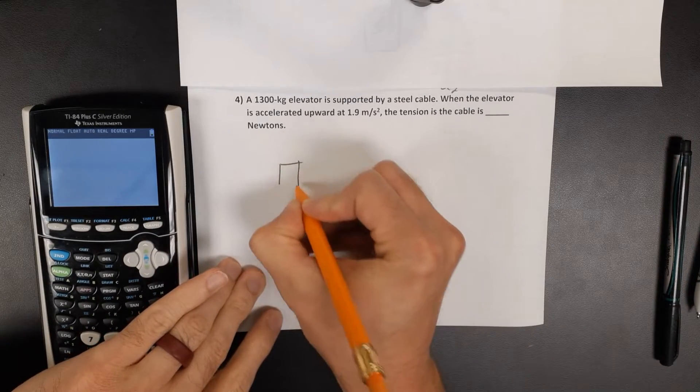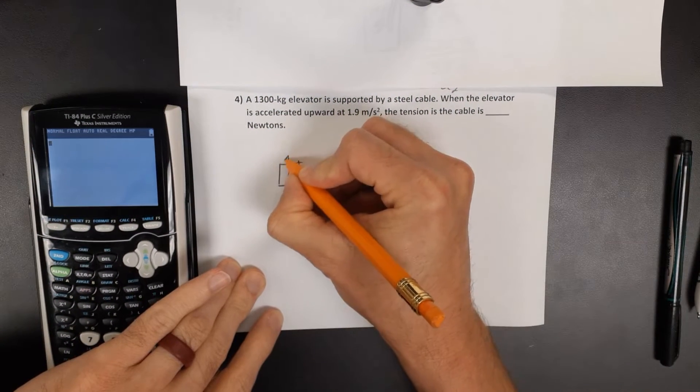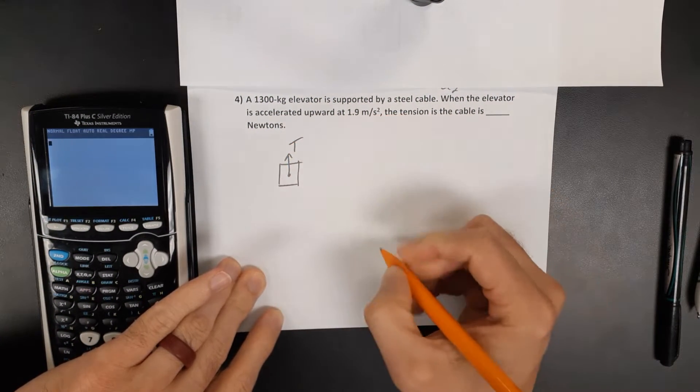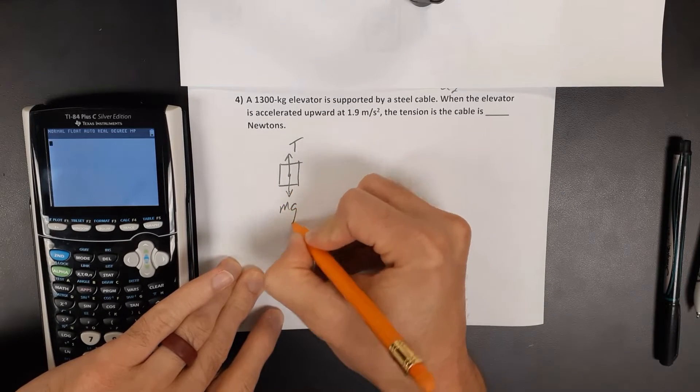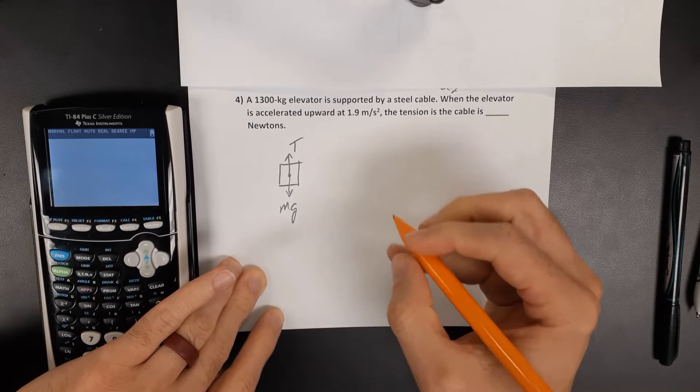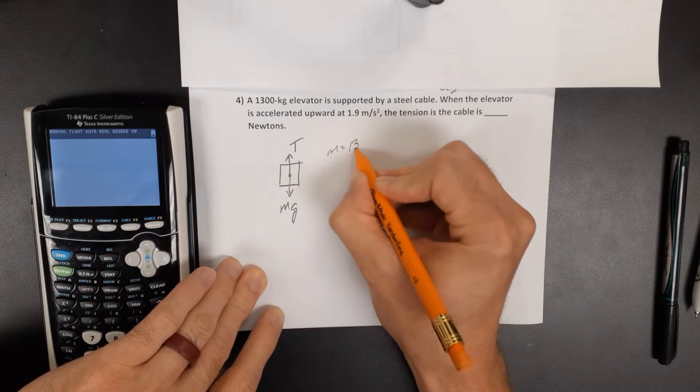Let's start by drawing a diagram. This elevator is being lifted due to tension while the force of gravity is pulling downward against it. We know the mass is 1,300 kilograms.